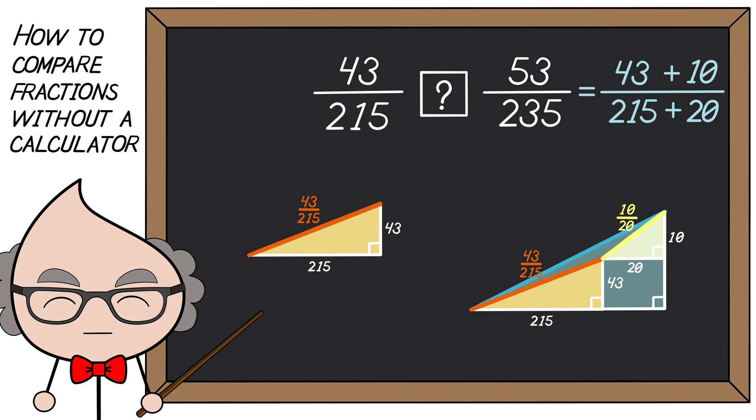A right triangle which has a length of 235 and a height of 53. And lo and behold, you can easily see that the slope of the triangle created from the second fraction is in fact steeper than the first one. Subsequently, the second fraction 53 over 235 is bigger than the first fraction 43 over 215.